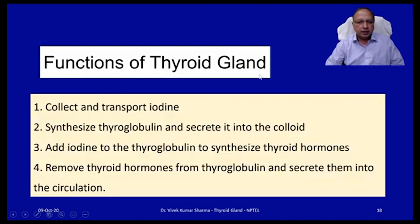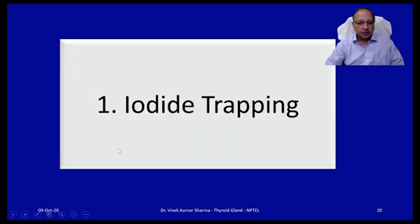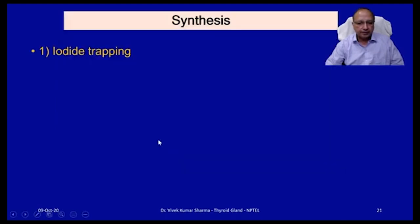The functions of the thyroid gland are: to collect and transport iodine; to synthesize thyroglobulin and secrete it into the colloid; to add iodine to thyroglobulin to synthesize thyroid hormones; and to remove thyroid hormones from thyroglobulin and secrete them into the circulation. The first step of thyroid hormone synthesis is iodide trapping — whatever iodine is taken in, it is absorbed by cells in the form of iodide.